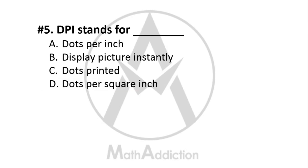Question No. 5: DPI stands for — what is the full form of DPI? Option A: Dots per inch, Option B: Display picture instantly, Option C: Dots printed, Option D: Dots per square inch. The right answer is Option A — Dots per inch. DPI is used to describe the resolution of a printer.